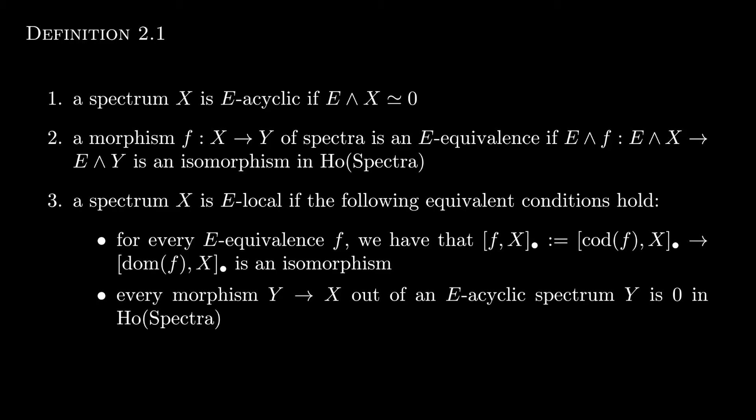I guess what I'm trying to get at is, first of all, that of course E itself is E-local. So the terminology of local maybe suggests the intuition that X is quote-unquote close to E. Things from the perspective of X look really similar to things from the perspective of E.